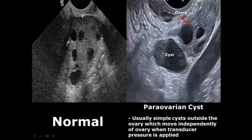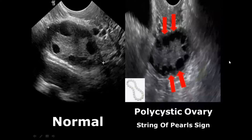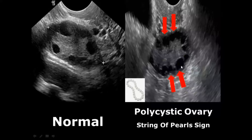Paraovarian cysts are simple cysts outside the ovary and move independently when transducer pressure is applied. Polycystic ovary occurs when there are more than 20 cysts inside an ovary, with follicle sizes ranging from 2 to 9 millimeters. Due to multiple cysts, this gives a specific appearance called the string of pearls sign — the cysts are lined up together looking just like a string of pearls.